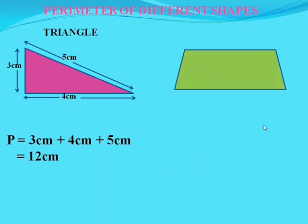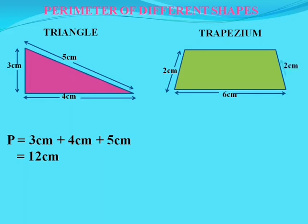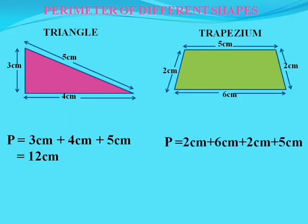Now let's take a trapezium which has sides of 2 cm, 6 cm, 2 cm, and 5 cm. We can find out the perimeter by the sum of all the sides: 2 cm + 6 cm + 2 cm + 5 cm, which becomes 15 cm.